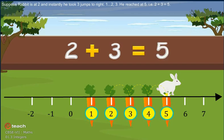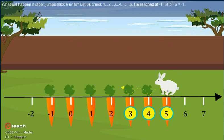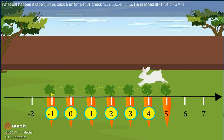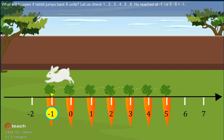What will happen if rabbit jumps 6 back units? Let us check. 1, 2, 3, 4, 5 and 6.